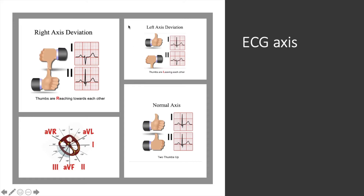If a patient has left axis deviation, the ECG will be positive in lead 1 and negative in lead 2. The way you remember this is that the leads are effectively leaving each other — left axis deviation. What this means is that there is some sort of pathology on the left side of the heart, as opposed to the right side.